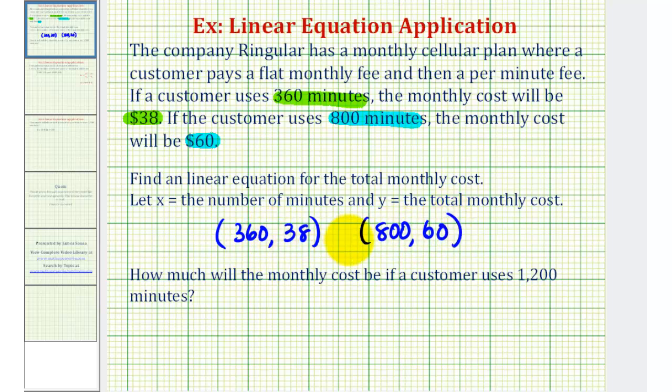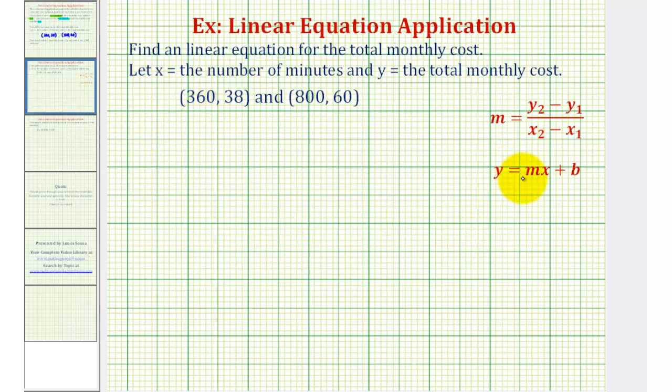So using these two ordered pairs, we'll now be able to find the linear equation that will model the total cost per month. We're going to use the slope-intercept form of a linear equation, or y equals mx plus b, where m will be the fee per minute, because x is the number of minutes and b will be the flat monthly fee.